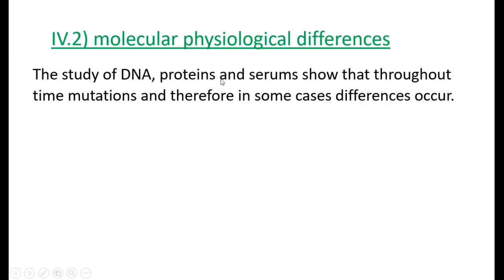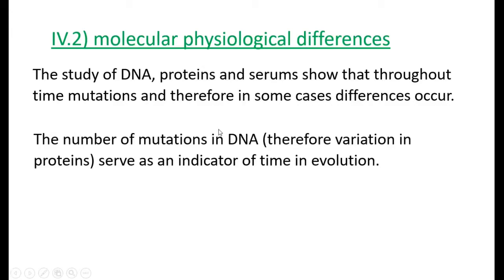Using DNA, proteins, or serums, because of mutations, DNA will vary and therefore proteins and serums will vary. Serums are what you have in your blood, and these elements, if you look at the number of mutations, can be used as an indicator of time and evolution and try to date back when certain mutations took place.